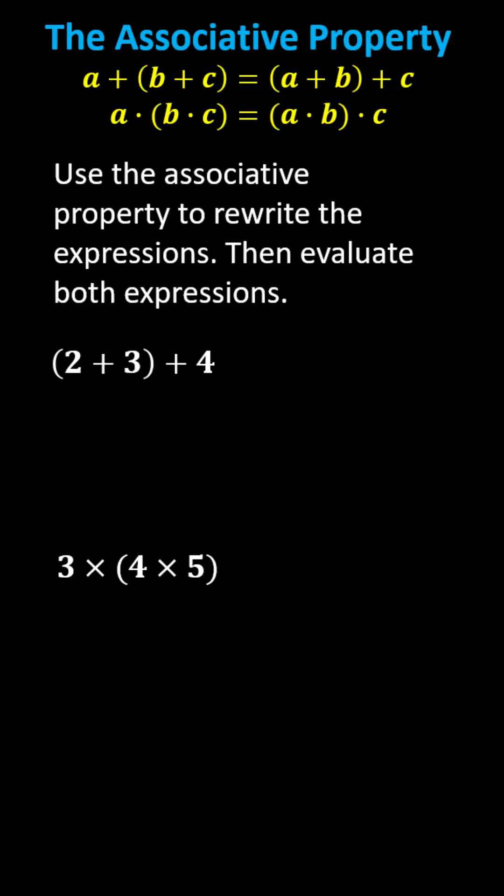The associative property of multiplication states that A times the product of B and C equals the product of A and B times C. The grouping of the products does not affect the result.